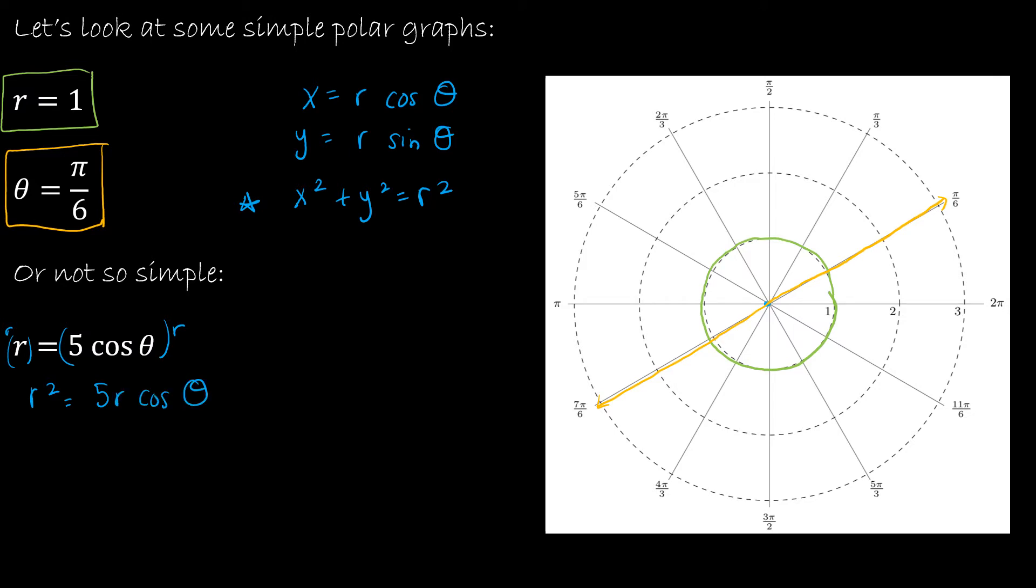So why is that helpful? Because now I can replace r squared with x squared plus y squared, which is helpful because I'm trying to turn this into a rectangular equation. So I want x squareds and y squareds. So I have x squared plus y squared equal to 5r cosine theta. Now what can I do? Well, r cosine theta is actually equal to x. So I'm going to replace r cosine theta with x.